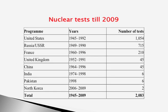You can see the list: the United States and the erstwhile USSR lead the chart, France comes next, the United Kingdom with 45, China with another 45, India with 6 in 1974 and 1998, Pakistan with other tests, and North Korea conducting its own tests. From 1945 to 2009, there were precisely 2,083 nuclear tests across 70 places in the globe.